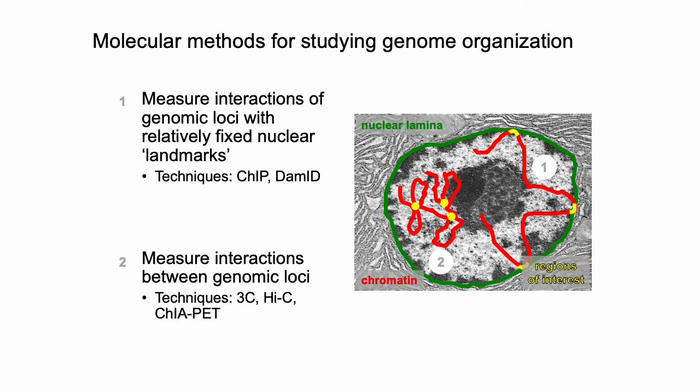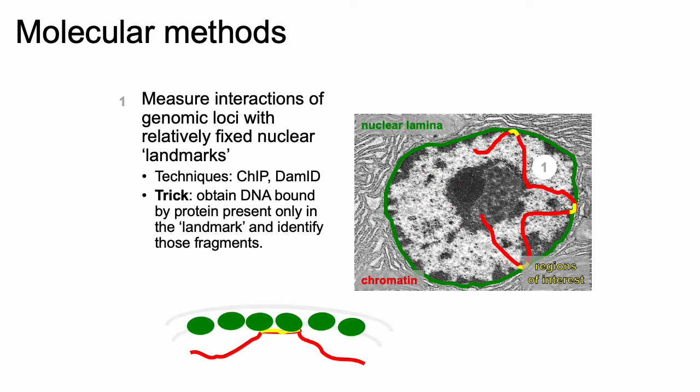The majority of this lecture will discuss different experimental assays for measuring genomic loci interactions. These basically fall into two categories: either measuring the interaction of genomic loci with relatively fixed nuclear landmarks, such as the nuclear lamina, using techniques like ChIP-seq or DAM-ID; or measuring interactions between genomic loci themselves, using techniques like 3C or Hi-C.